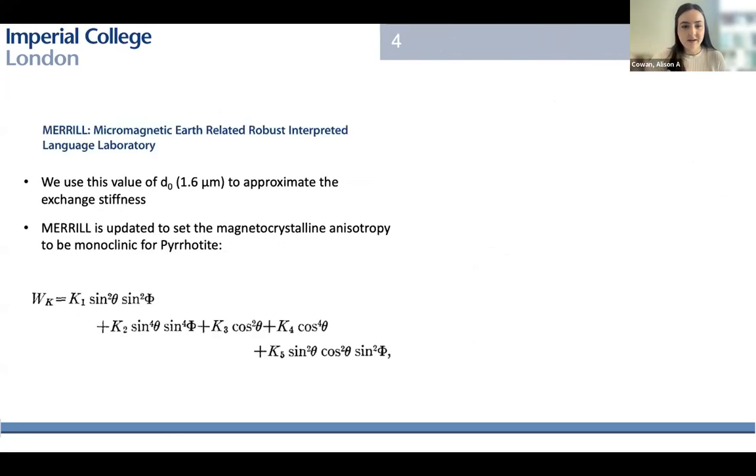Soffel, with his study with the Bitter pattern imaging, estimated that the single domain to the multi-domain transition occurred about 1.6 microns. So we are looking to do the first micromagnetic study of pyrrhotite and really focus in on this gap of knowledge at the submicron level. How we've done that, we've used this value that Soffel estimated, which is the 1.6 microns, which is the single domain to multi-domain transition, and we've used this to approximate the exchange stiffness constant that we need to run in MERRILL.